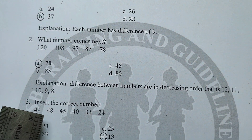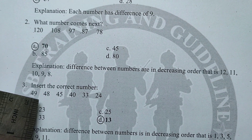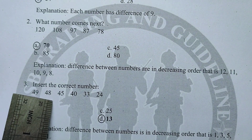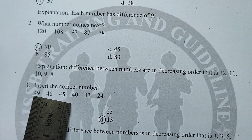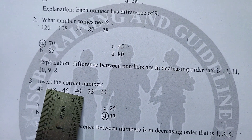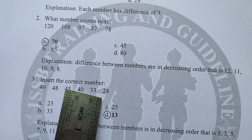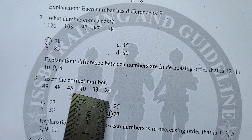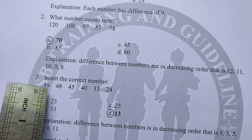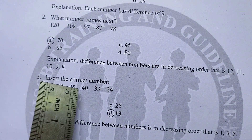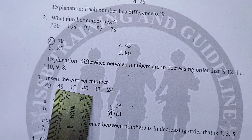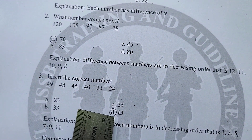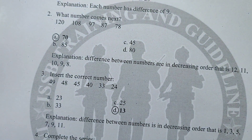Question number 3: insert the correct number. The series has differences of 1, 3, 5, 7 — increasing odd numbers. Between 49 and 48 the difference is 1, between 48 and 45 the difference is 3, then 5, then 7. After 24, the next differences are +9, then +11, then +13, so the pattern continues with increasing odd differences.